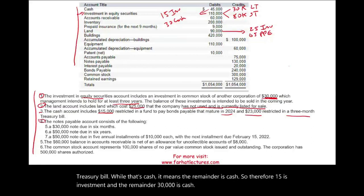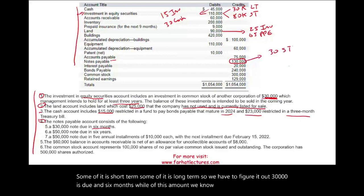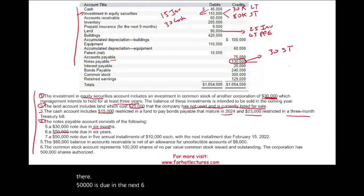Let's look at number four. The notes payable accounts consist of the following. So we have notes payable and we have $130,000 in notes payable. Remember notes payable, some of it is short-term, some of it is long-term, so we have to figure it out. $30,000 is due in six months. Well, of this amount, we know $30,000 is short-term, right there. $50,000 is due in the next six years. Well, we know $50,000 is long-term. And $50,000, note, due in five annual installments, $10,000, with the next installment due on February 15, 2022, which is our balance sheet year.